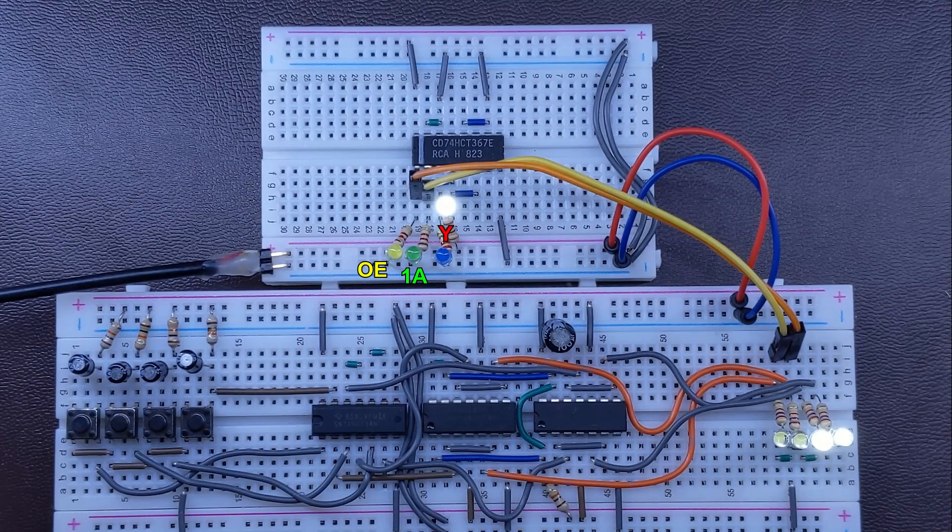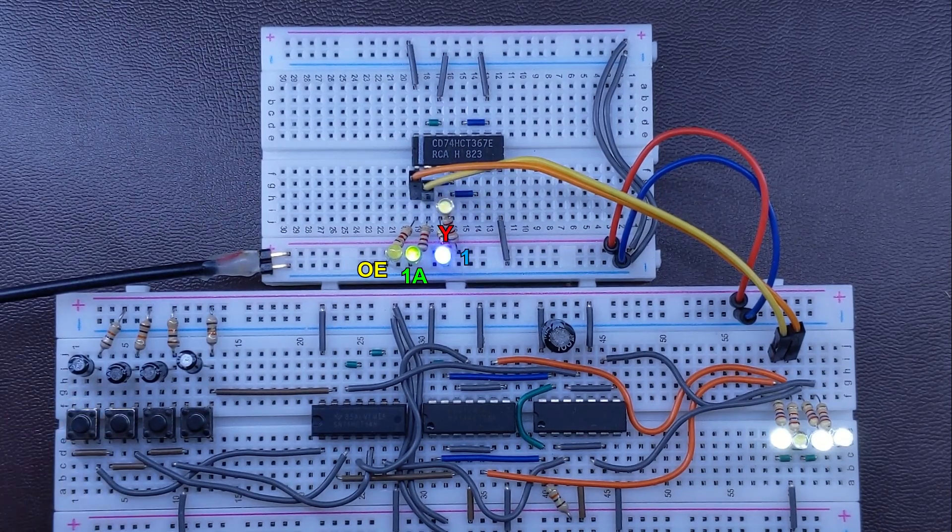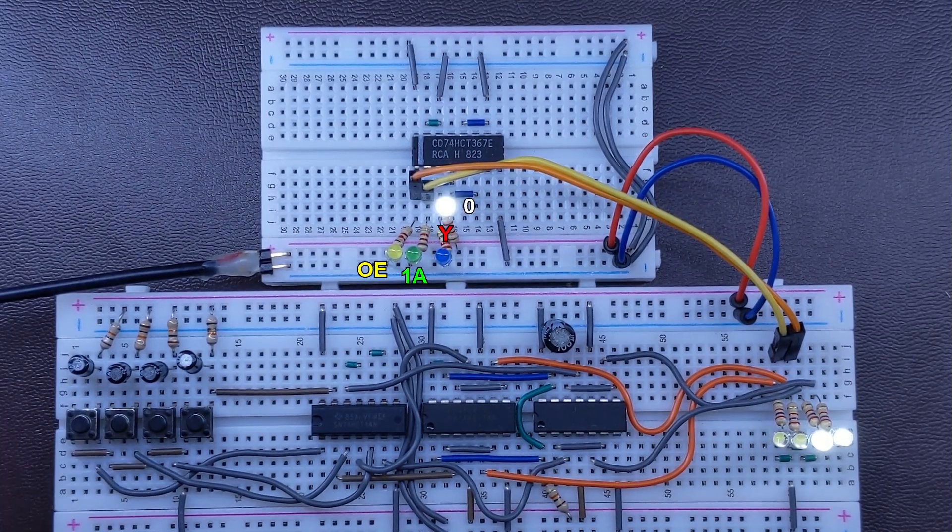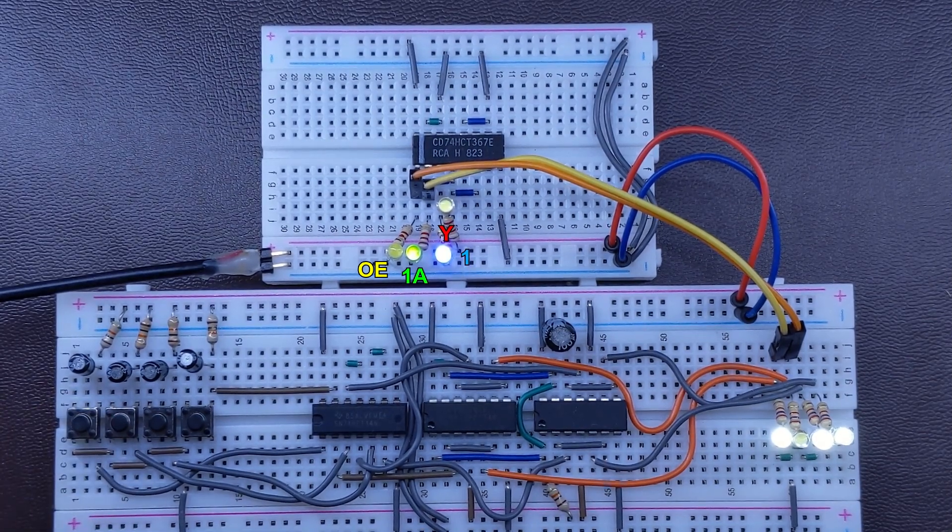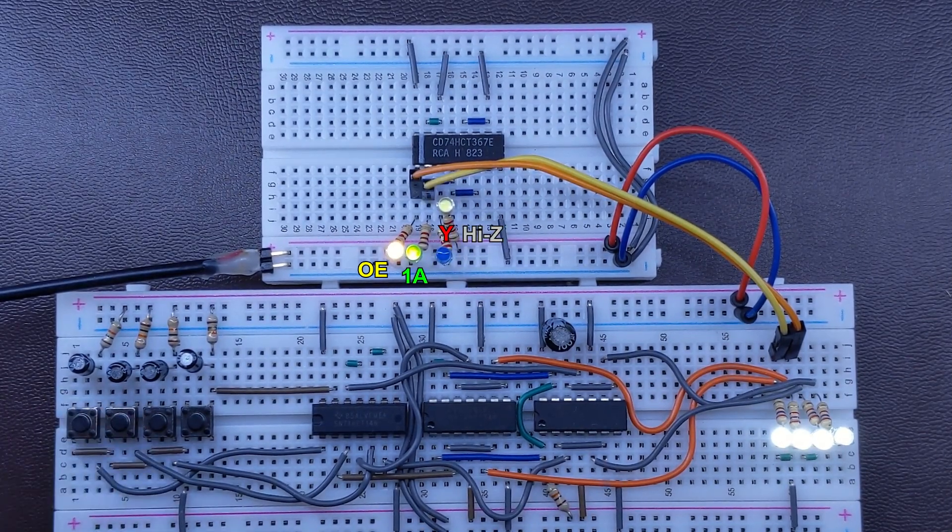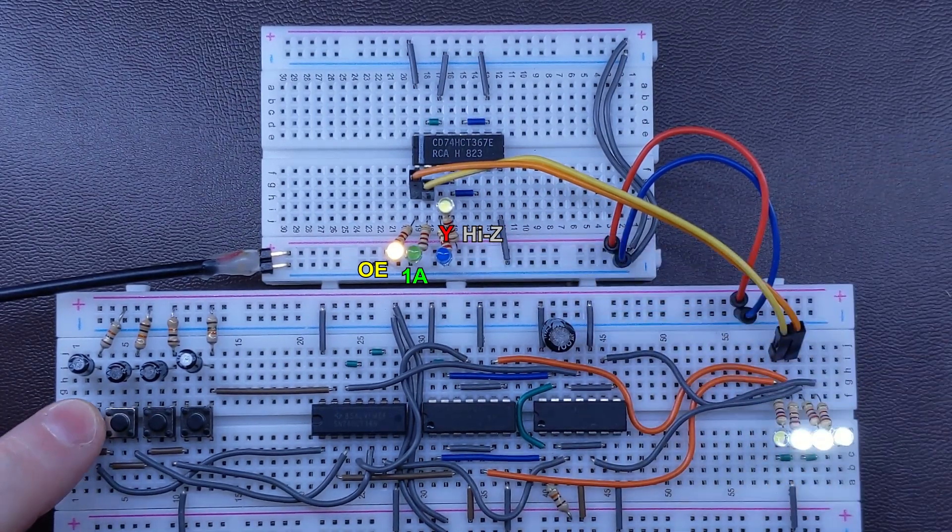As you probably remember, buffers simply repeat their input state on the output. As you can see, the output repeats both 0 and 1 when it is allowed by the output enable input, sometimes marked by the letter G. But when we switch the output enable to 1, the output gets into the high Z state, irrespectively of the input's logical state.